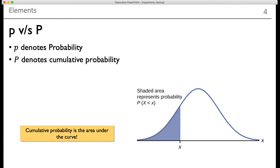When we are talking about the area of a particular curve, there comes the concept of two different notations. One notation is small p and the other notation is capital P. Capital P denotes the cumulative probability. Small p denotes probability. The cumulative probability is the area under the curve that you can see in this particular figure.